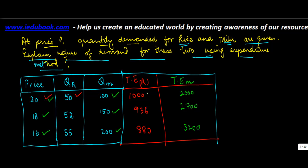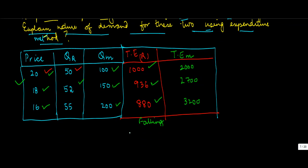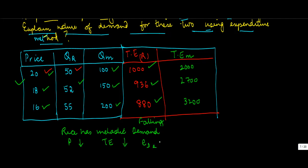What is happening in the case of rice is that the total expenditure is falling even when the price is falling and quantity is increasing. So we conclude that rice has inelastic demand — because when price is falling, total expenditure is also falling, meaning the elasticity of demand for rice is less than 1.